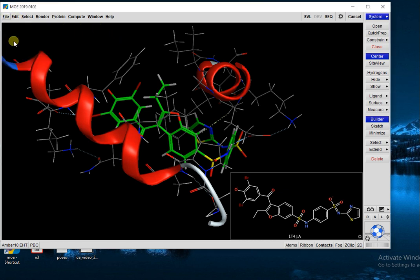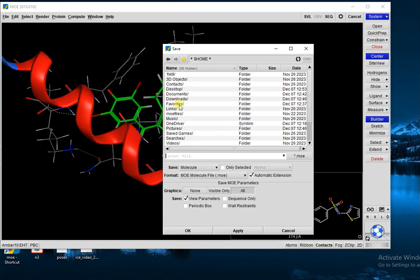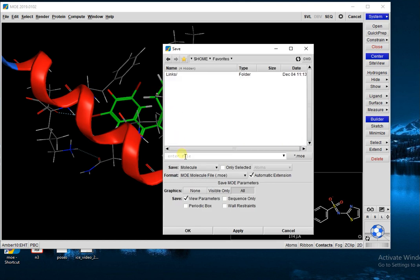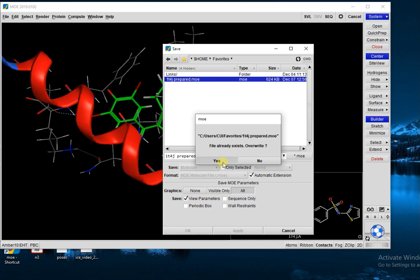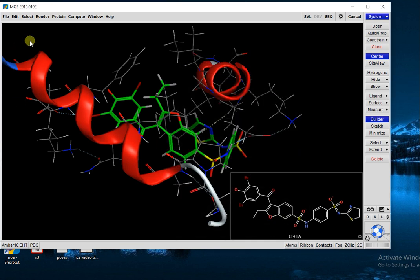I give it a name. My enzyme name is 1T4J. I just write the name. As this protein is prepared, I simply write 'prepared', then Apply. Now press OK. This protein is saved in your folder.